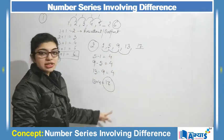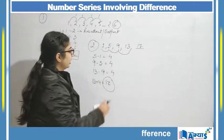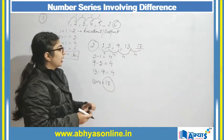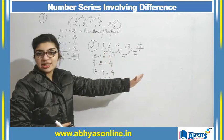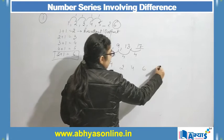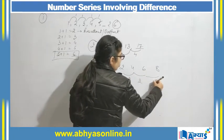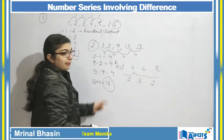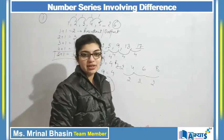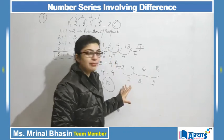Now there are also chances that the resultant is not always constant. For example, if the differences are 2, 4, 6, 8 — I can derive another resultant to form another series. So let us consider a more complex example to understand this concept in a better manner.